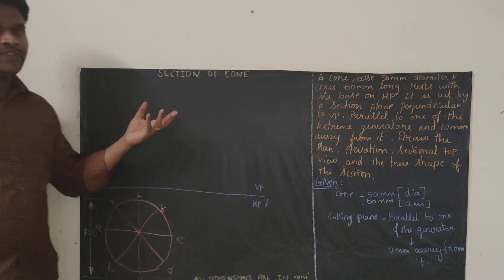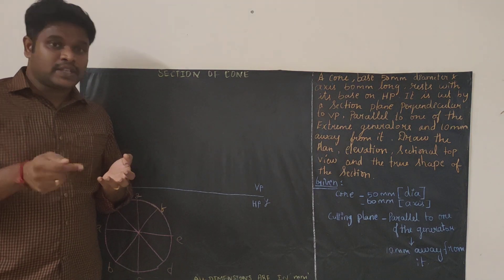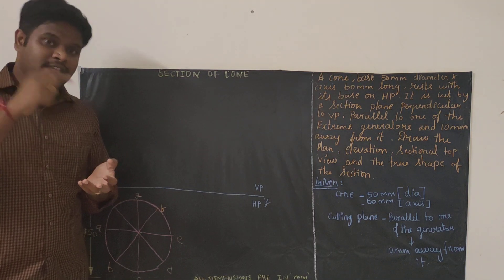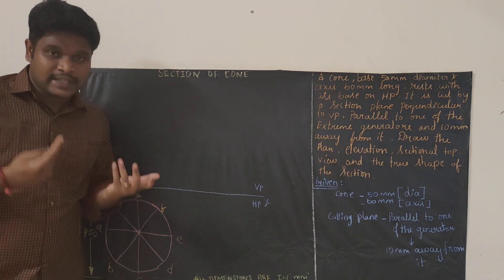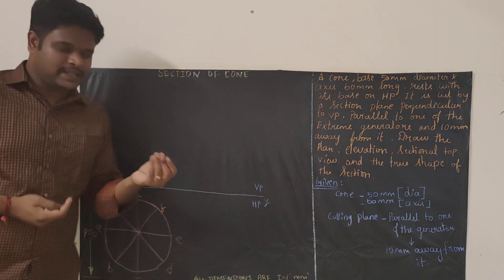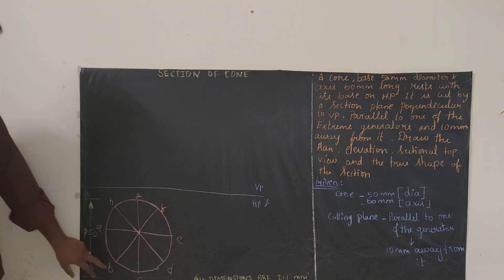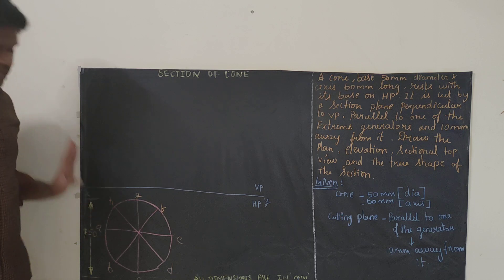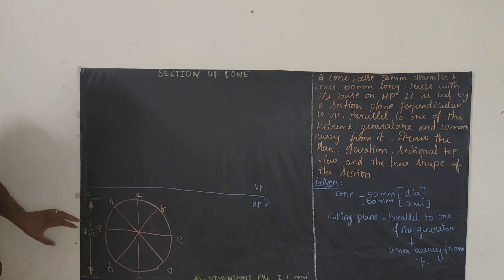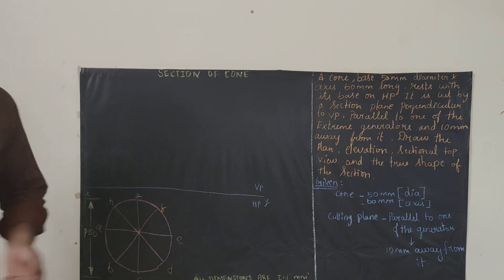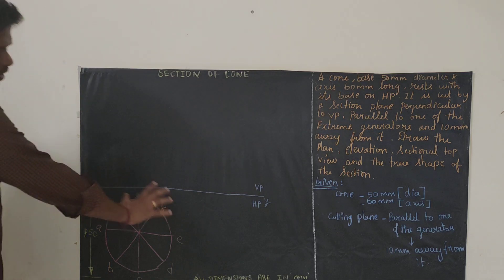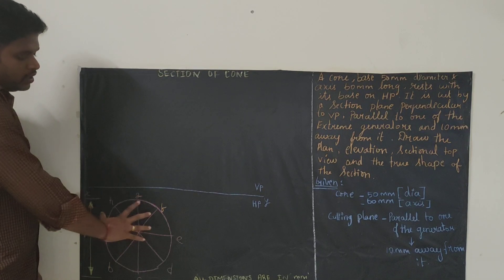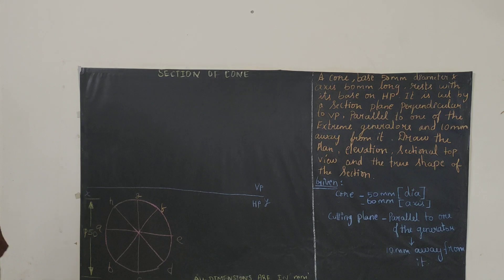You have to name the points. Since we are having a cone, we will be having only 8 namings. If we had a cylinder, we would have 16 namings. The bottommost portion is named A, B, C, D and the topmost is the apex. Write A, B, C, D, E, F, G, H. You have to dimension the diameter of the circle. Whatever we draw here is the top view, and using this top view, we are going to draw the front view of the cone.